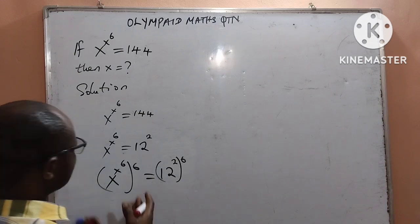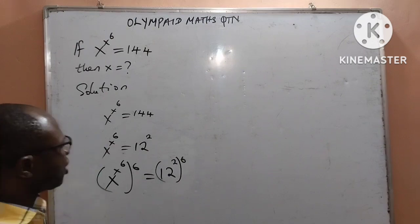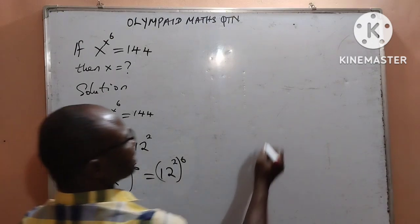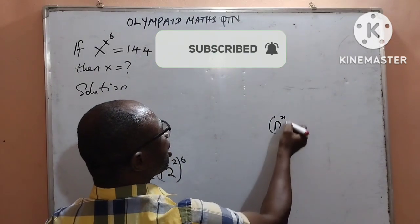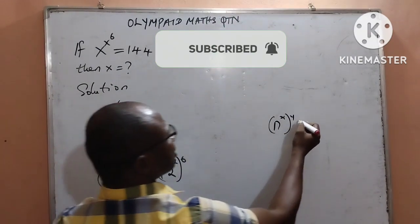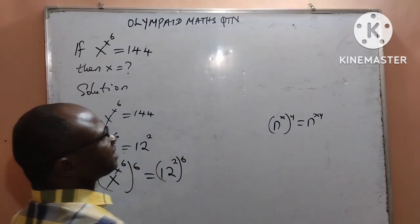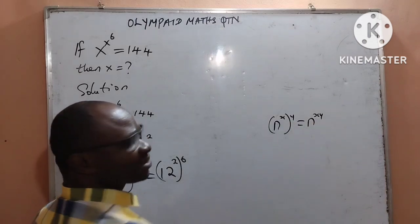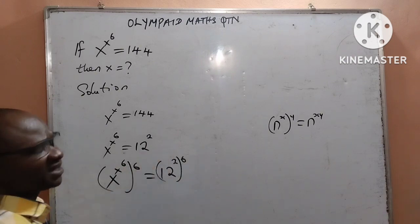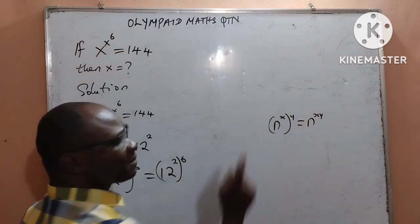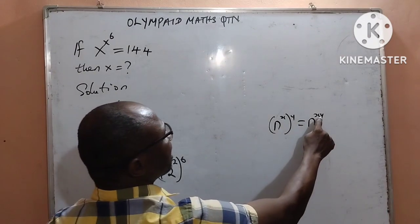The law of indices that always comes up when this type of question arises: if I have n to the power of x, all multiplied by the power of y, that is equal to n to the power of x times y. What it means is that I will multiply the powers. I am going to apply that here.